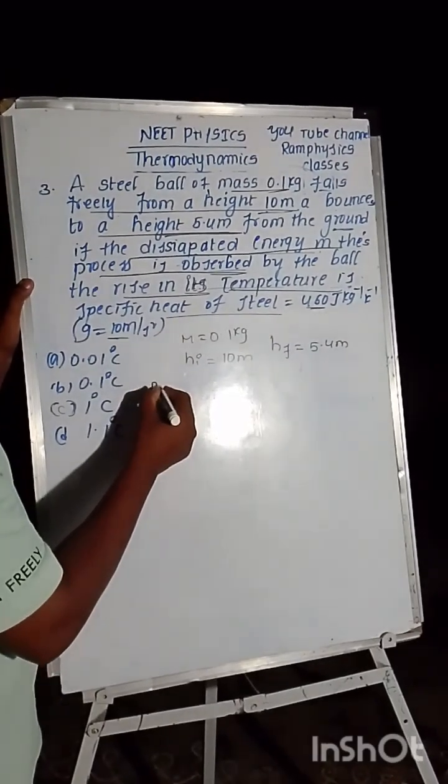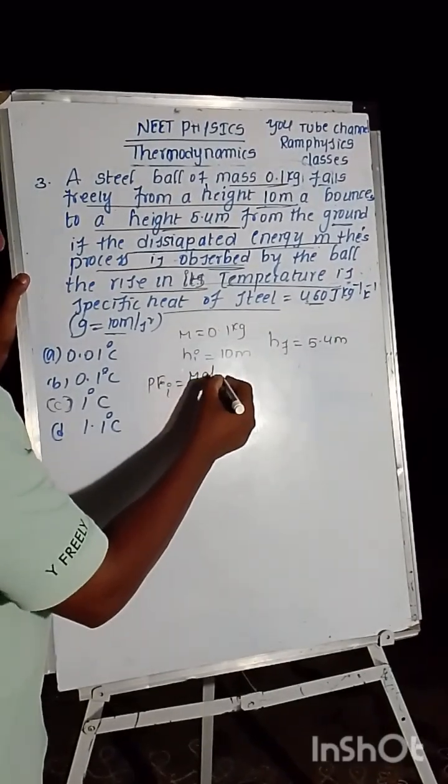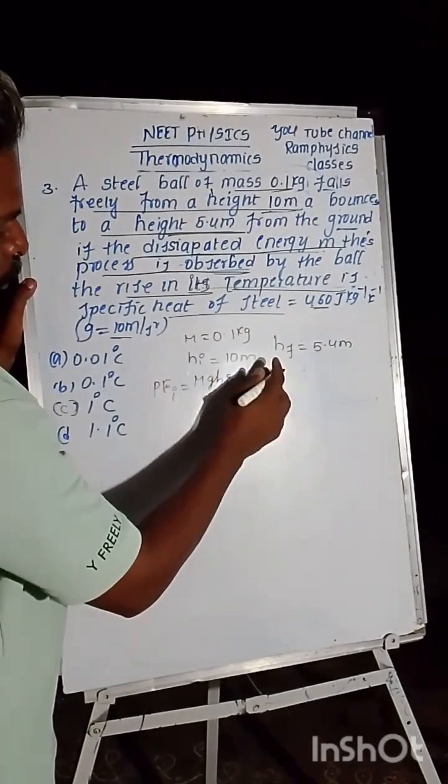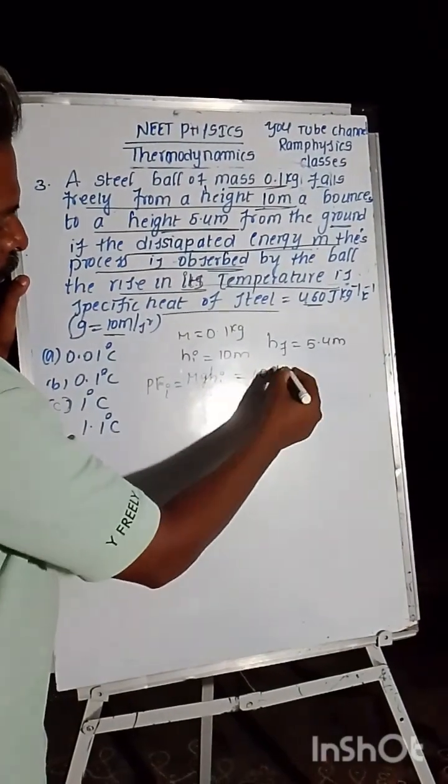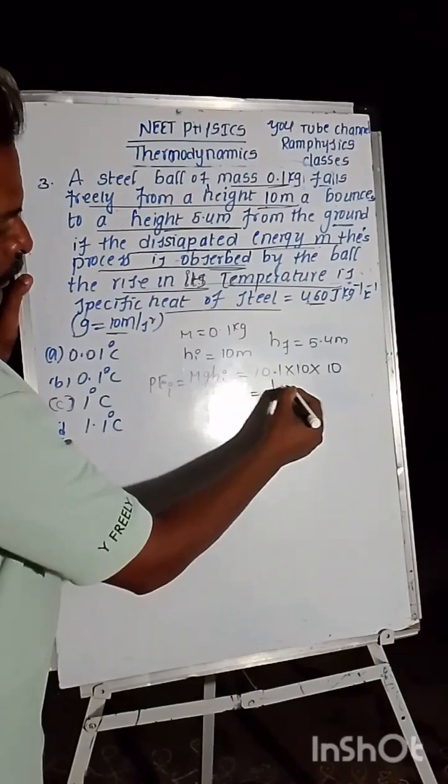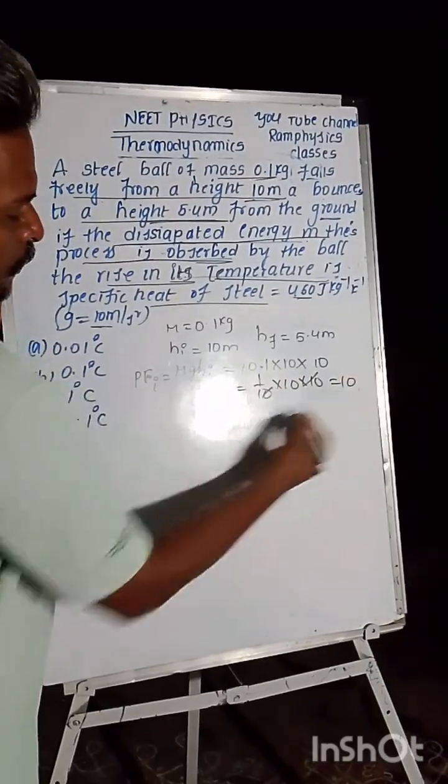So first condition, potential energy initially PE_i is equal to mgh_i. That is mass 0.1 into gravity 10, into height 10. So we have 1/10 into 10 into 10. These two will be cancelled, that is equal to 10.